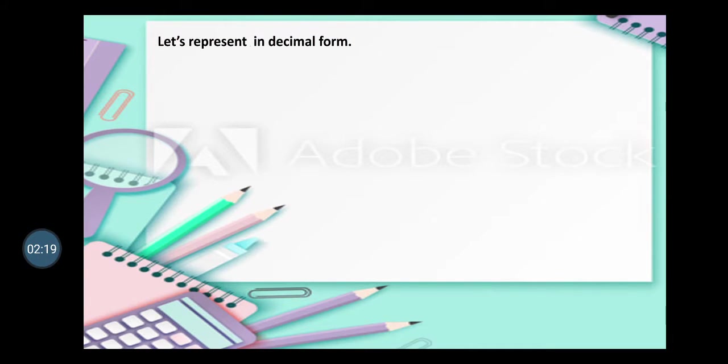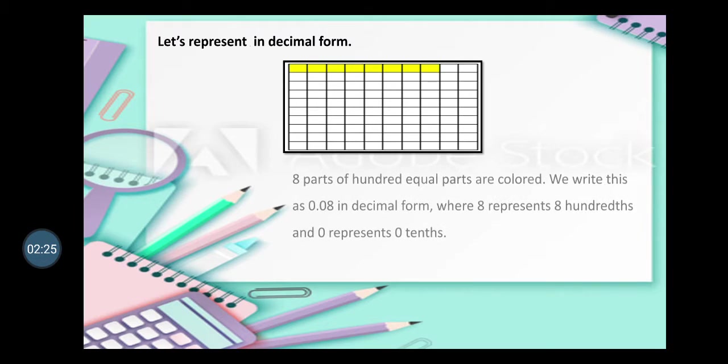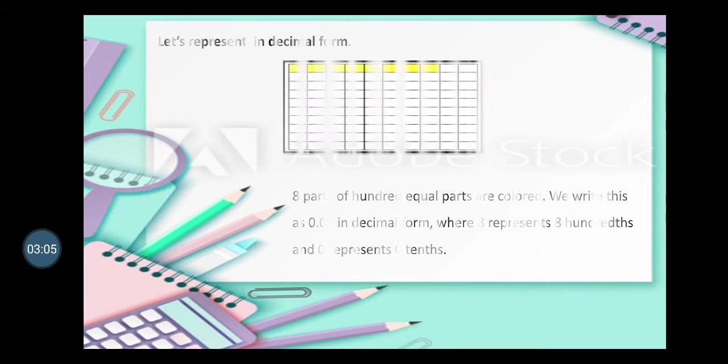Let us represent in decimal form. Here we can see that this picture is also divided into 100 equal parts, and 8 parts of the hundred equal parts are colored in yellow. We write this as 0.08 in decimal form, where 8 represents 8 hundredths and 0 represents 0 tenths. Because we have to divide 8 by 100, and we know that if the denominator is 100, it means it has two zeros, so we have to move the decimal point by two places to the left.